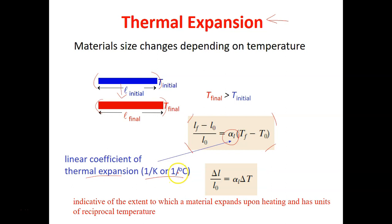The alpha L is called the linear coefficient of thermal expansion and the units is reciprocal of temperature. It is a property that indicates the extent to which a material expands upon heating.